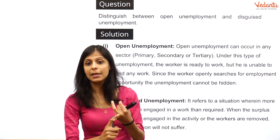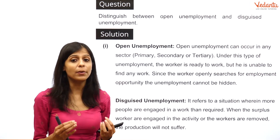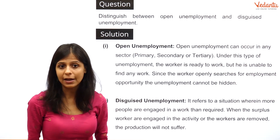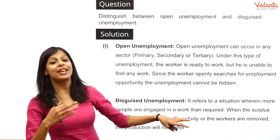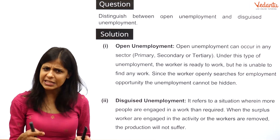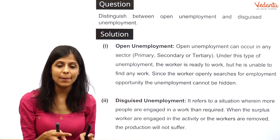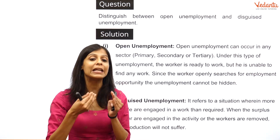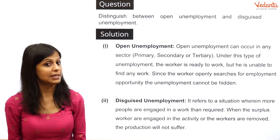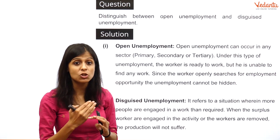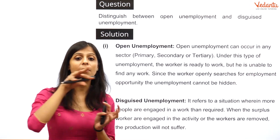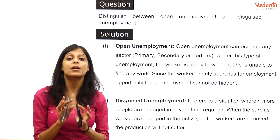Open unemployment is clearly visible — the person simply has no work. Disguised unemployment, also called hidden unemployment, is mostly seen in the agricultural sector where many people appear to be employed, but there is no improvement in marginal productivity. Even if you remove two or three people from a group of five, production stays the same. Surplus workers are engaged in a basic activity and if removed, production would not be impacted at all.